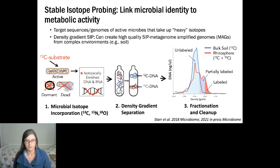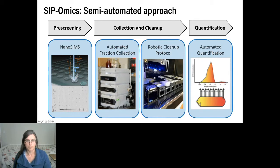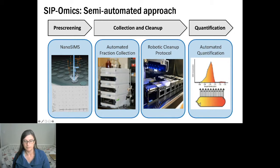SIP metagenomes are great for generating high-quality MAGs from complex environments, but the protocol is very laborious with a lot of hands-on time. This was the focus of our ETOP project: to develop a semi-automated approach to make SIP more high-throughput and accessible to the scientific user community. We focused on pre-screening DNA, automated fractionation, and cleanup steps.